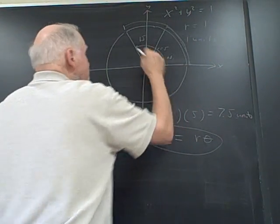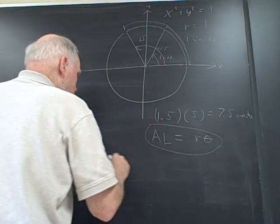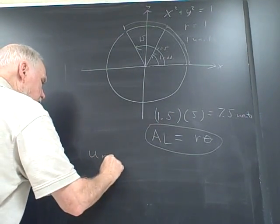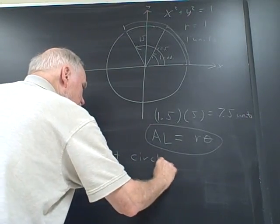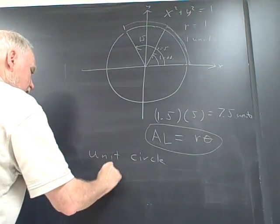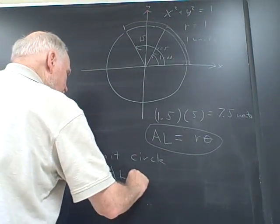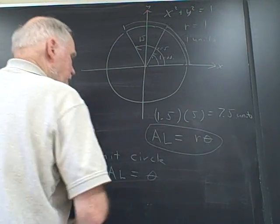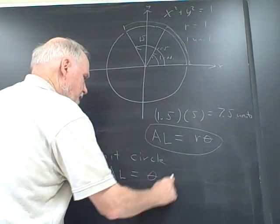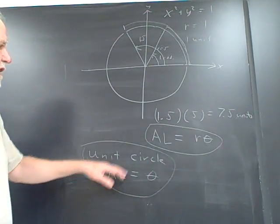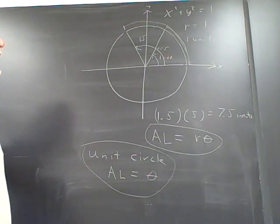Then, if it's the unit circle, this arc length formula gets much simpler. It's arc length equals theta, and that's it. And so we're going to use this in the next video, both these ideas in the next video.